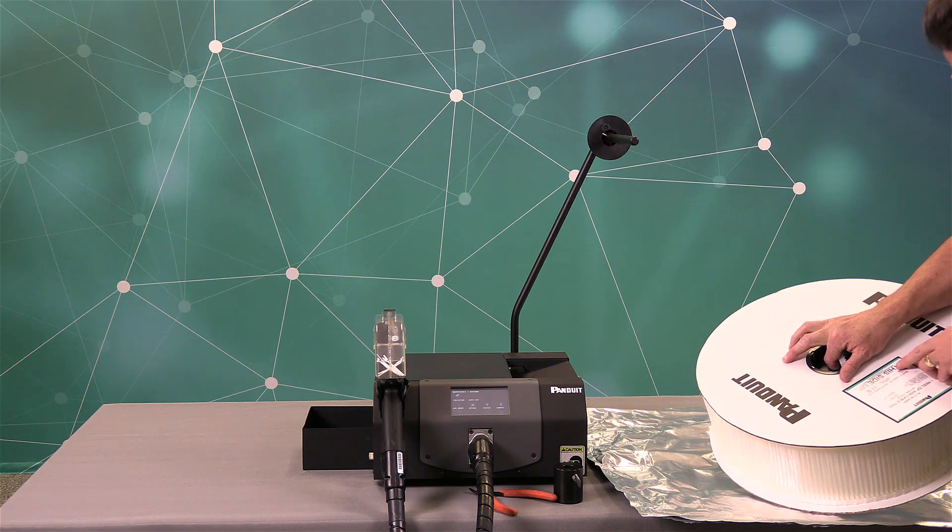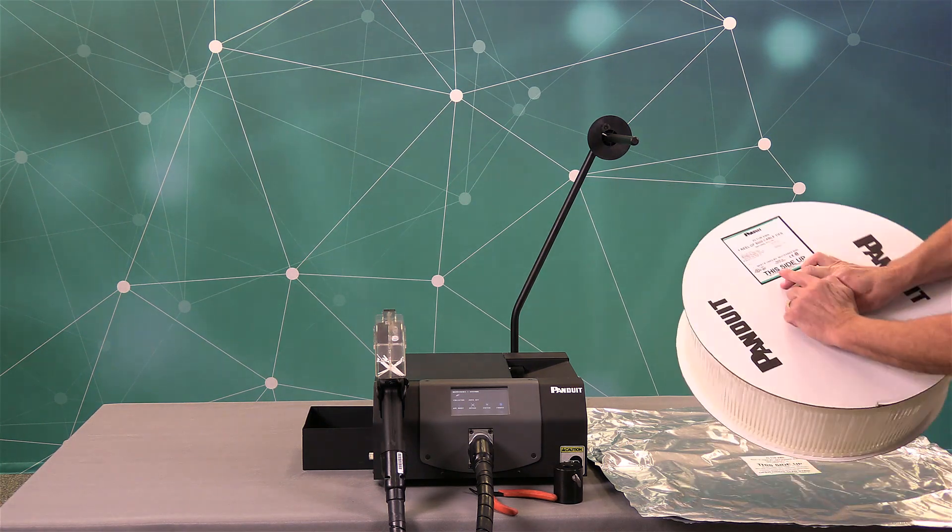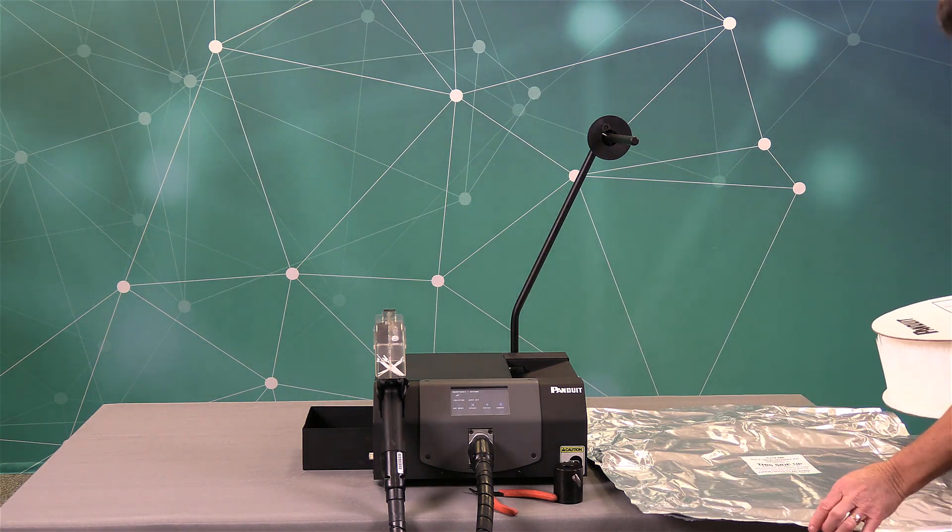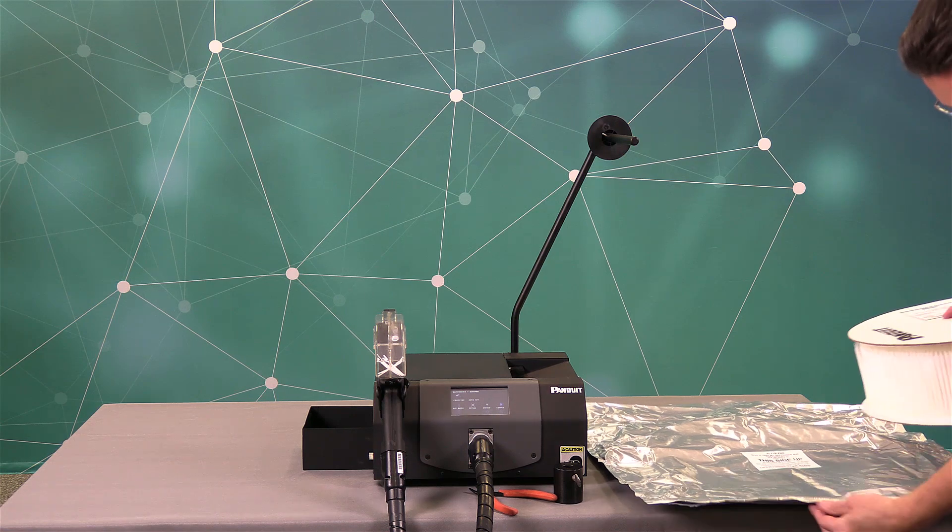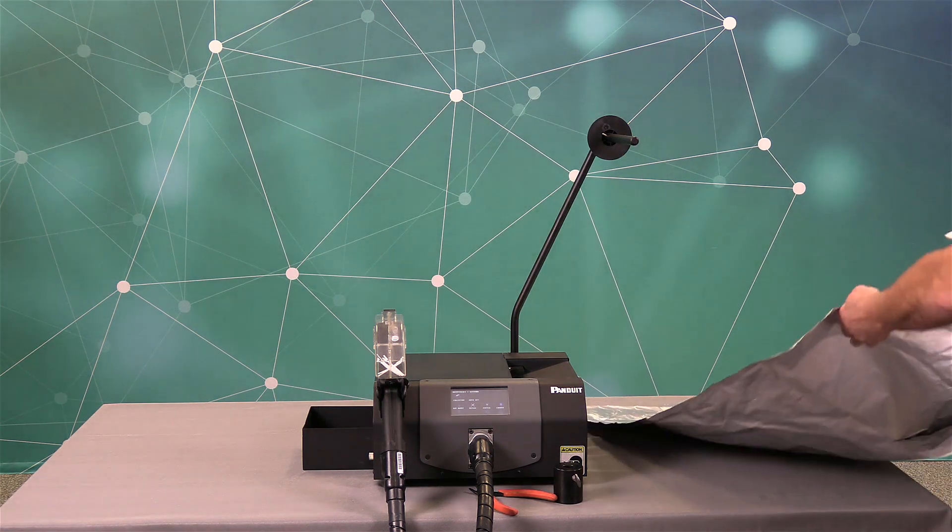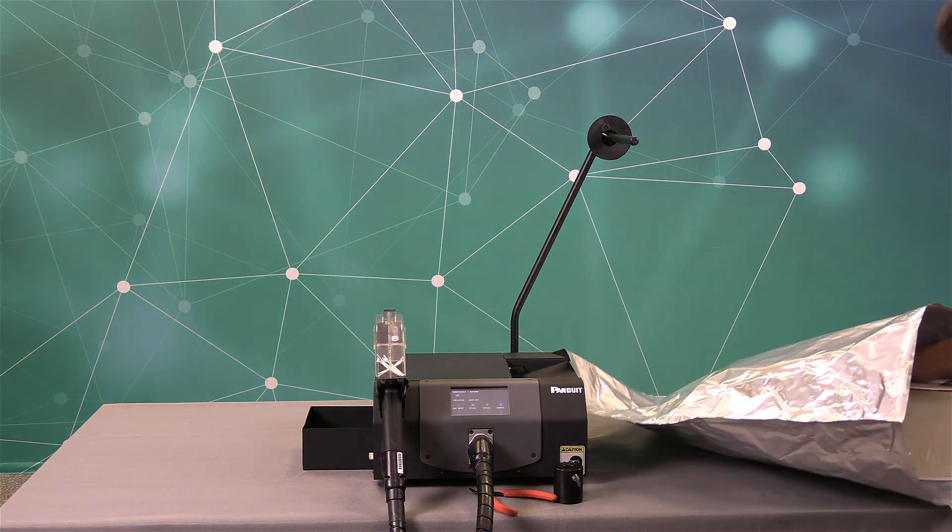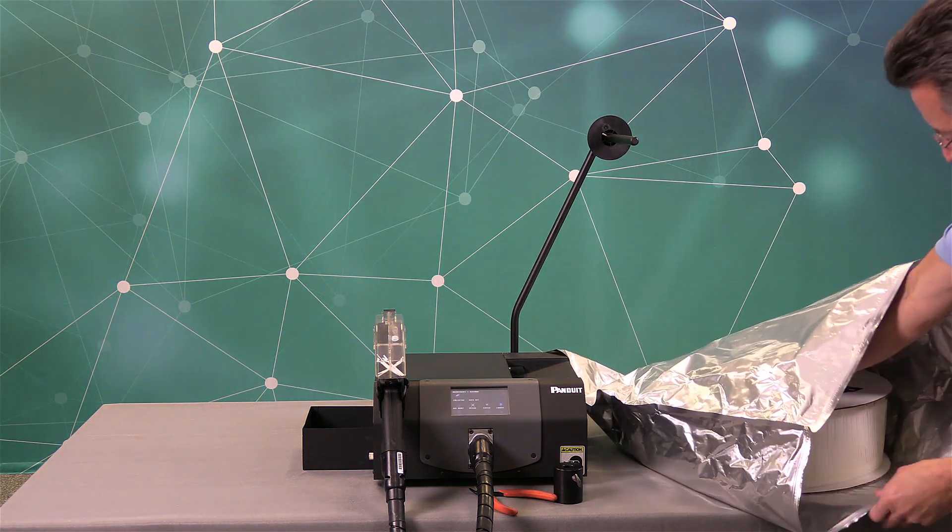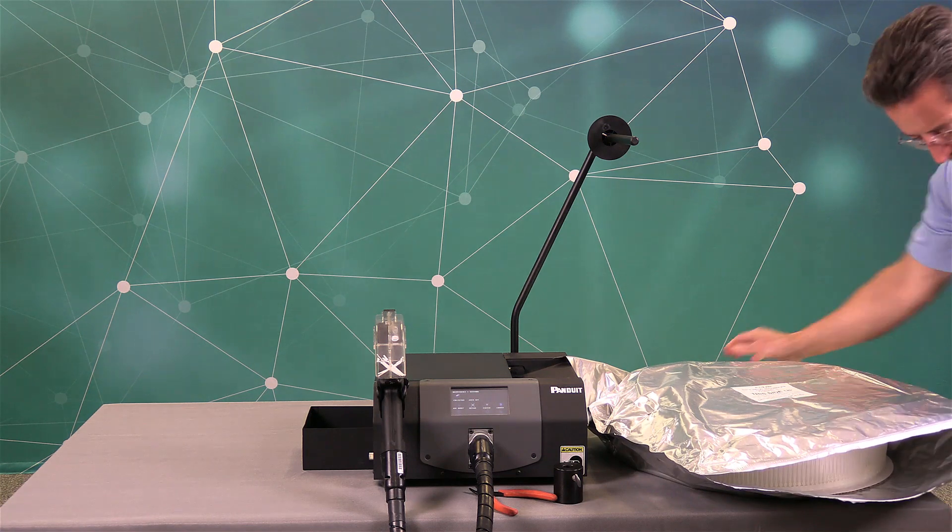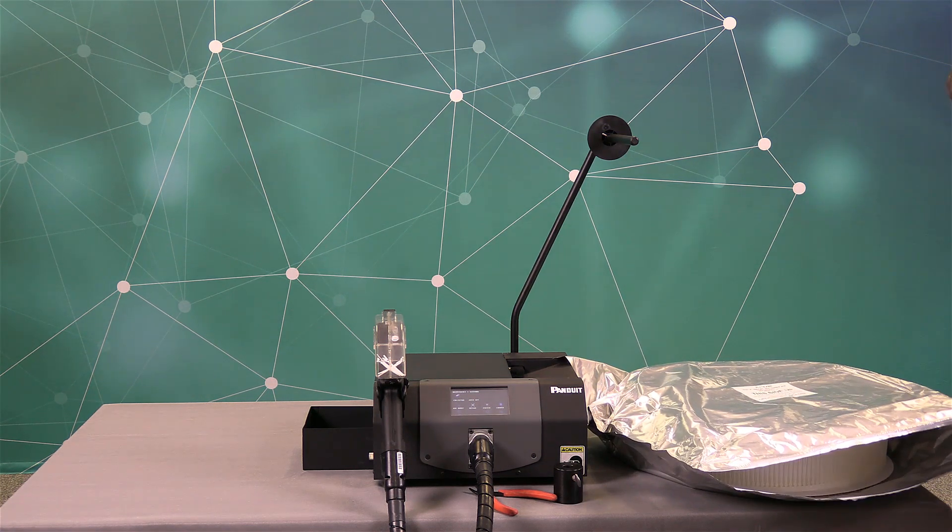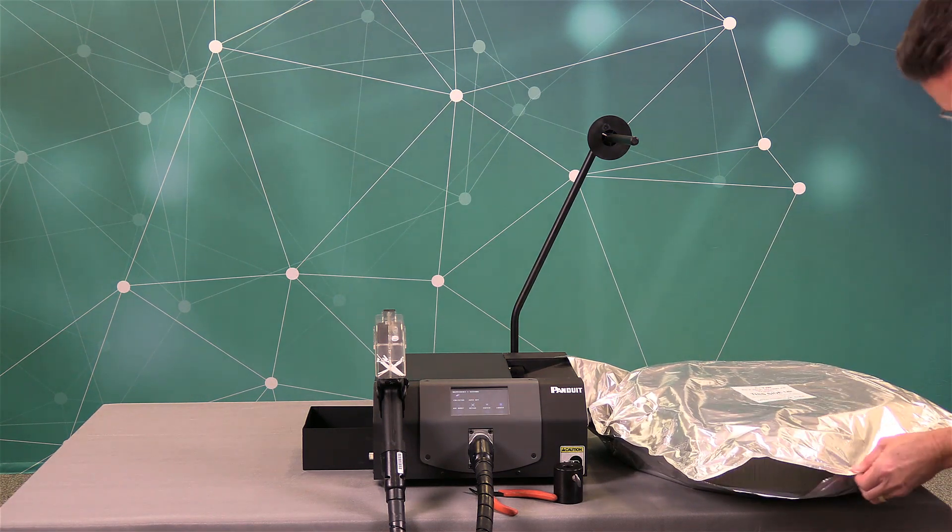And then what we can do is open up our bag. And both the reel says this side up. And also the bag says the same, but you want to put the ties in there like that. Open the bag, slide the reel in. And then you can seal the bag with the zip lock to retain the tie moisture.